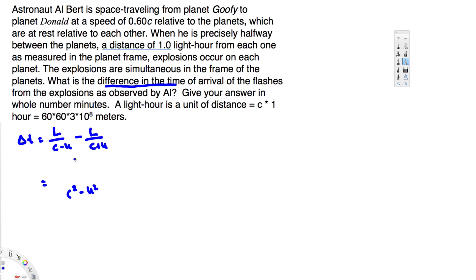In the top, we are going to have L times (C + U) and minus L(C - U). Let's multiply this one, so this is going to be LC + LU - LC + LU, and in the bottom we have C² - U².